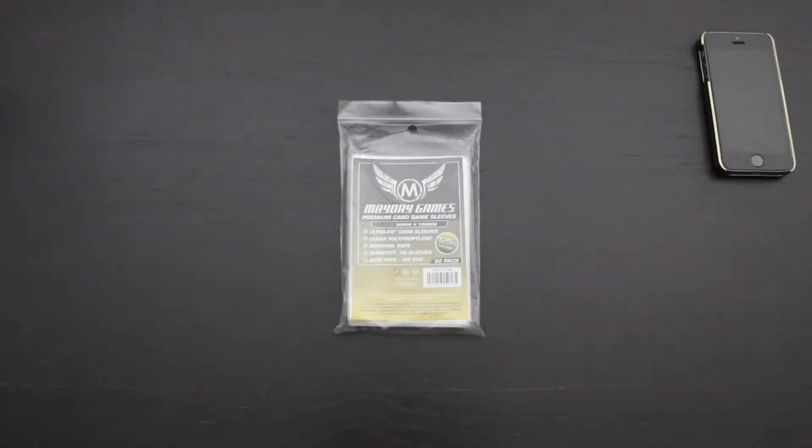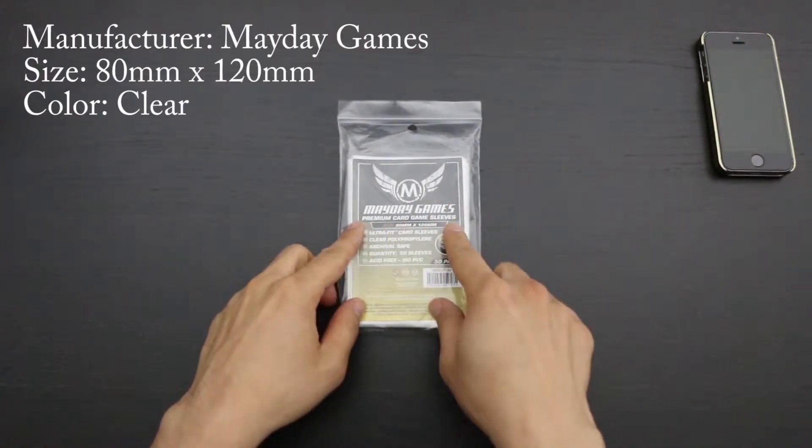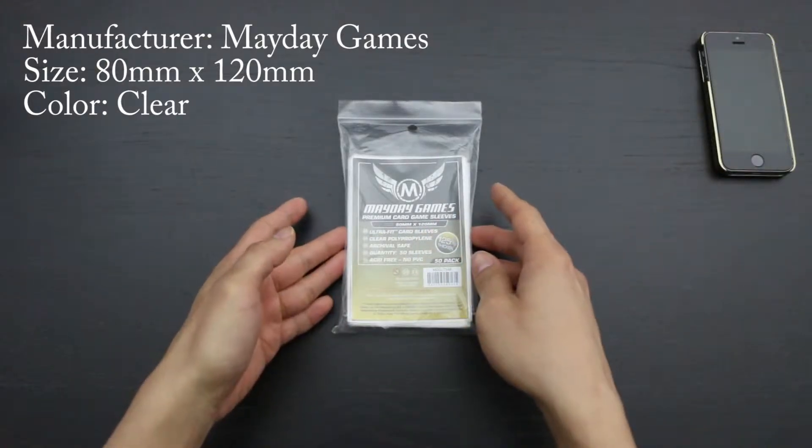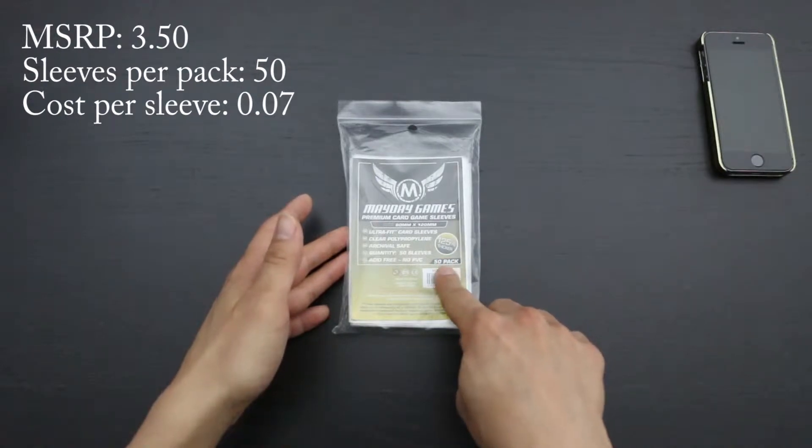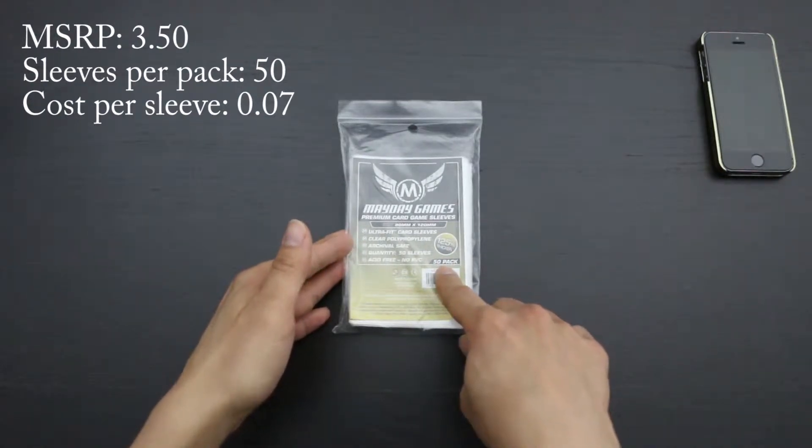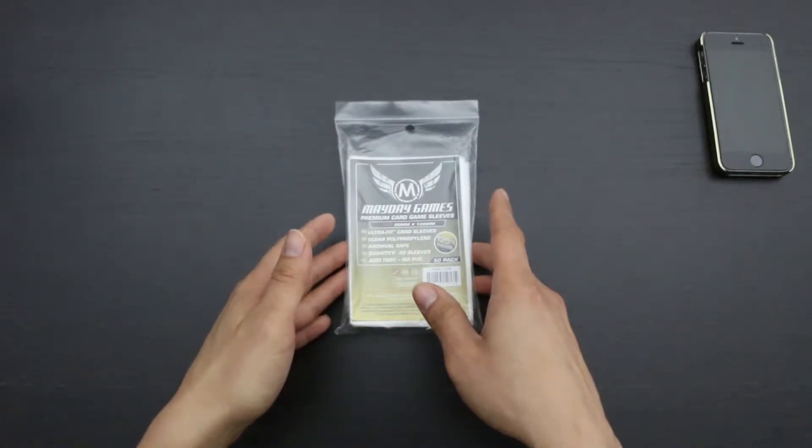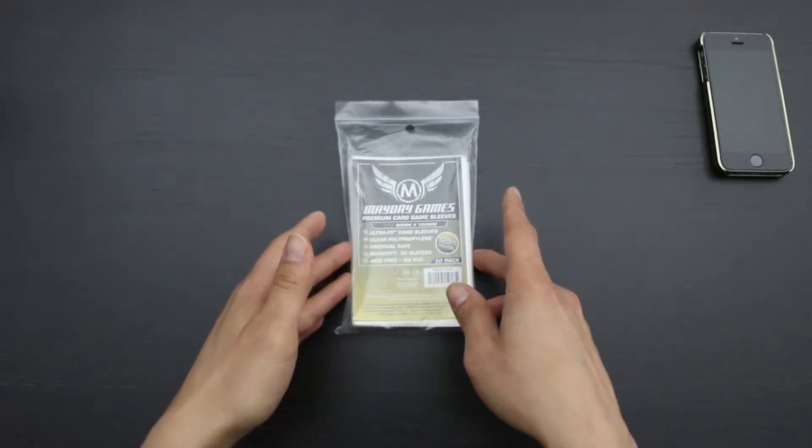Hello everyone, this is Refresh and I'm here to bring you a look at Meta Games' premium card game sleeves for cards size 80mm by 120mm. These sleeves are clear and they retail at $3.50. For that $3.50 you get 50 sleeves and that is an average of $0.07 per sleeve. This puts it right in the middle range of costs per sleeve and we will see if we are getting a middle range performance.